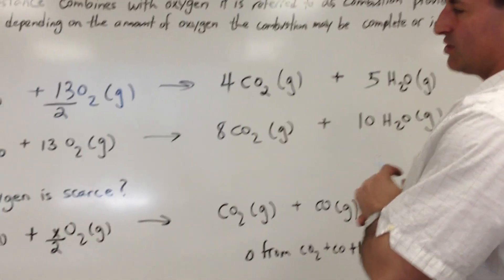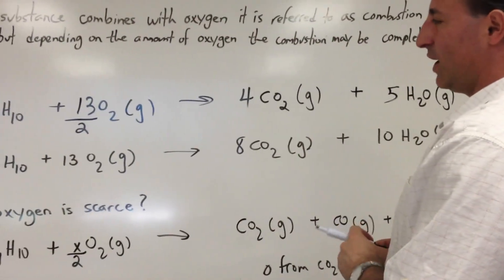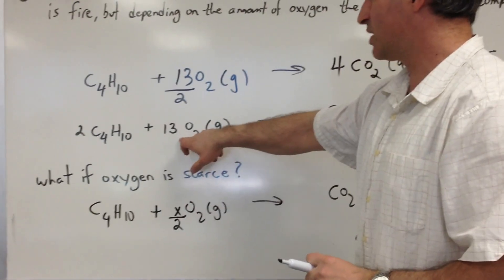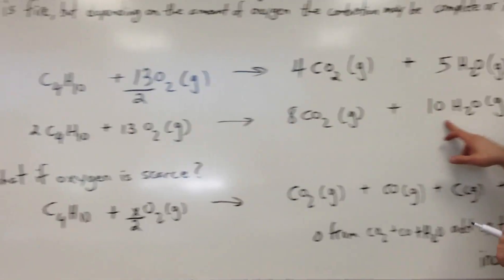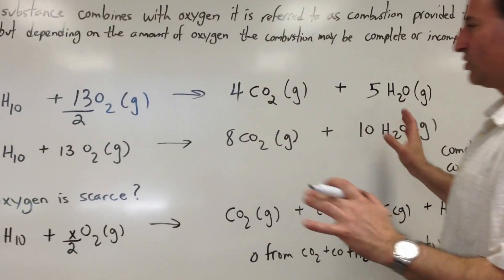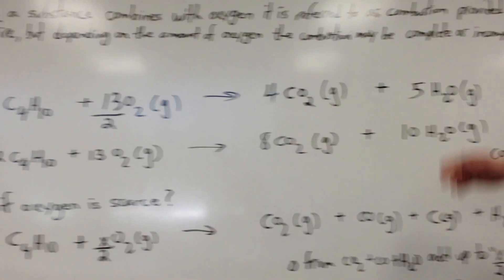Now, if writing fractions bothers you, even though it's perfectly legitimate, if you don't like writing fractions, you can simply double everything. Put a two in front of the butane, this becomes 13, that becomes 8, that becomes 10, and there is your balanced combustion equation with no fractions in it, all integer values. Both of these are correct.